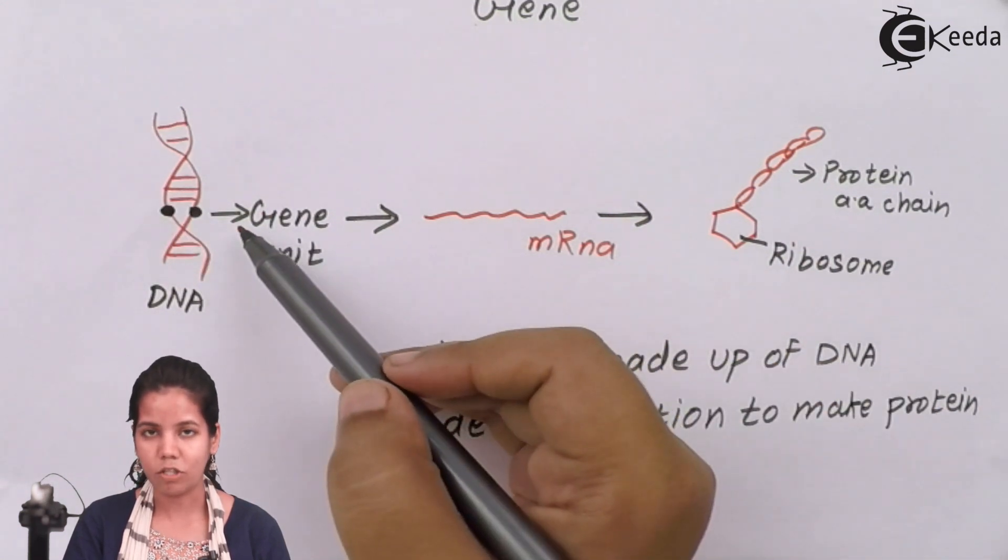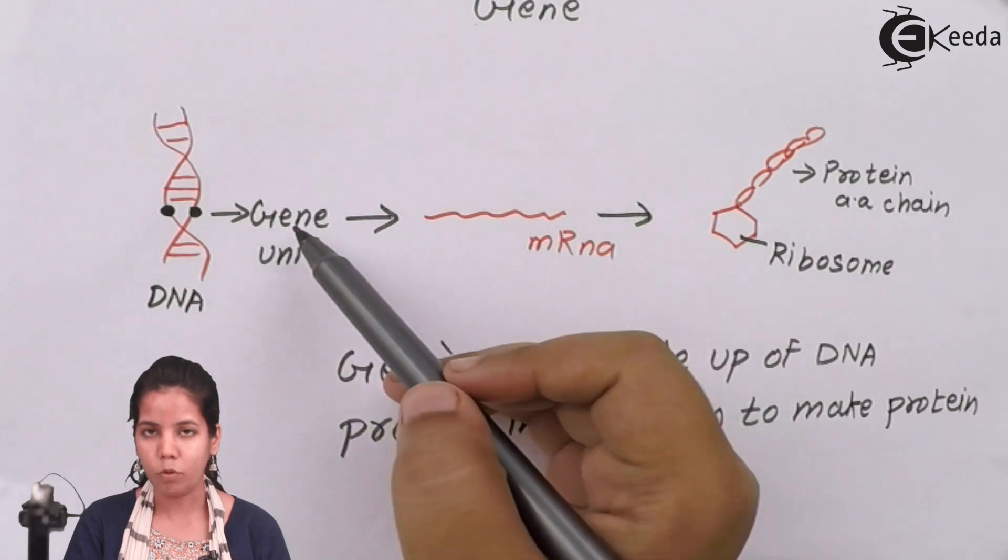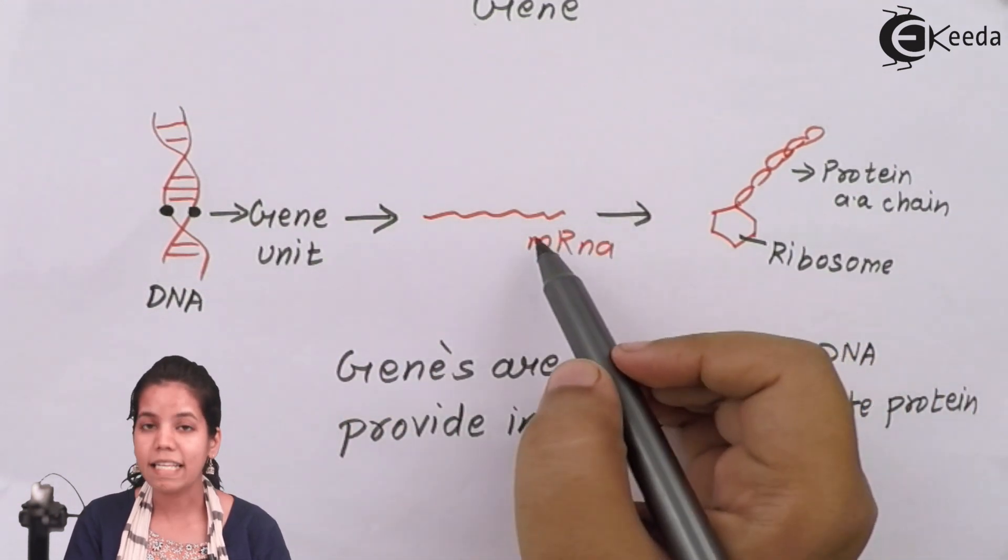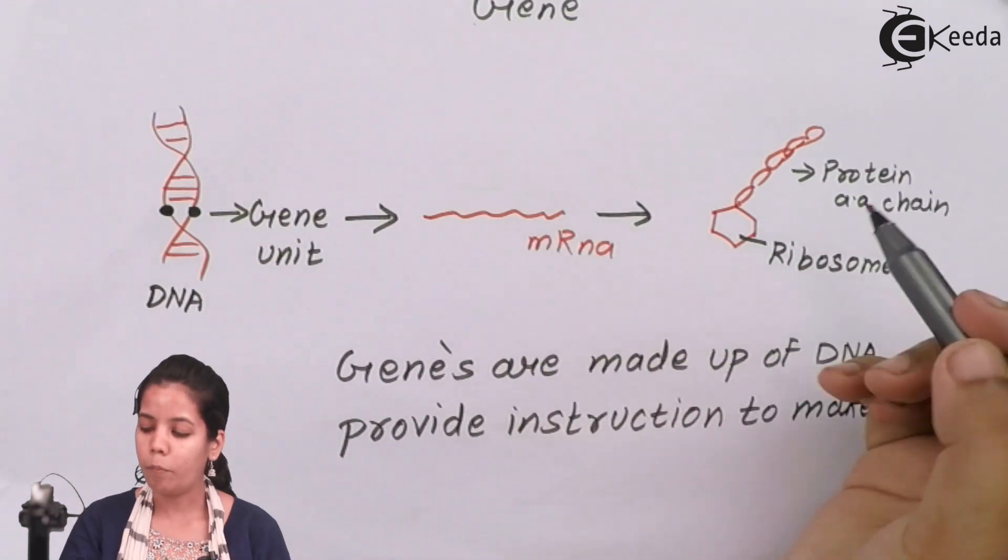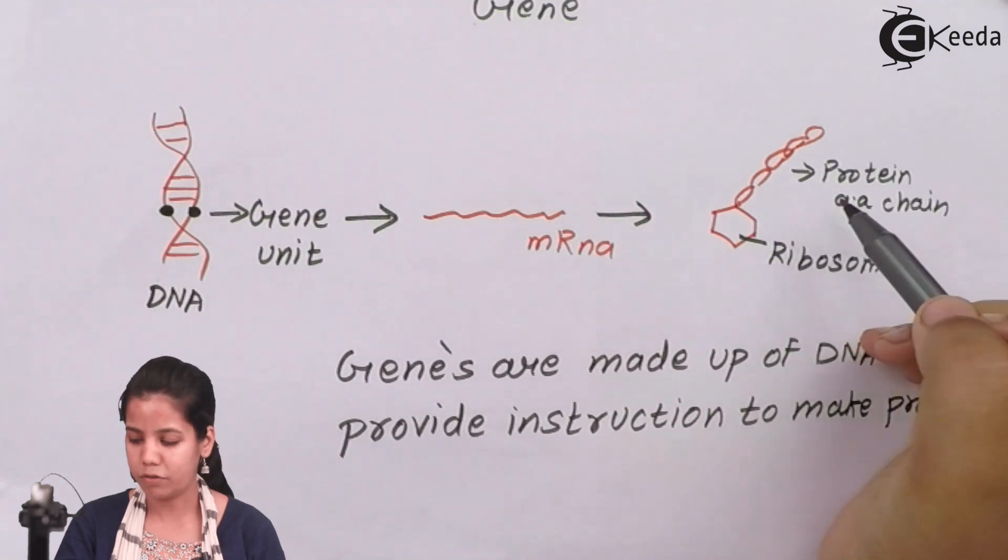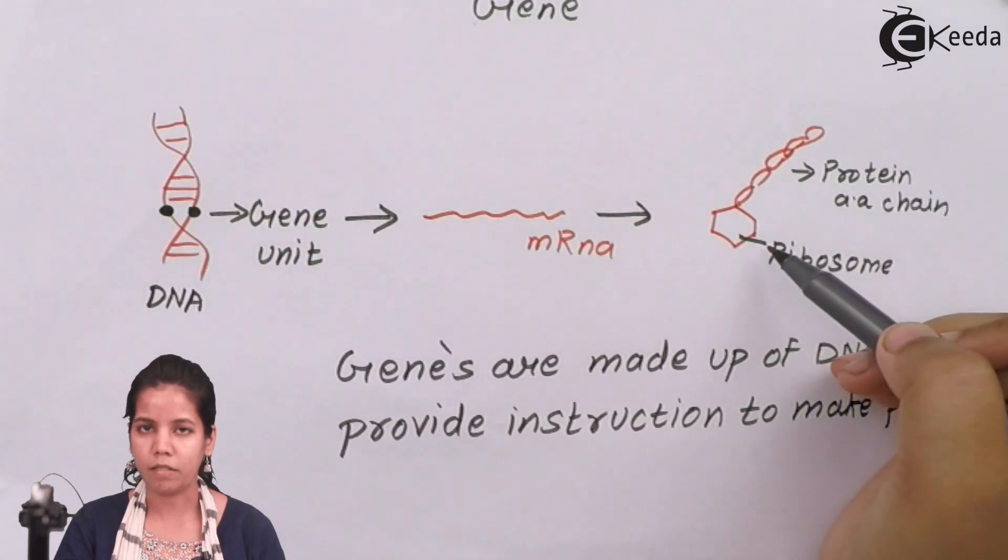Now these genes basically help to code for mRNA. mRNA is single-stranded. It has codons. Now with the help of anti-codons present on tRNA, polypeptide chain or protein is formed and ribosomes take part. Basically the process of transcription and translation.